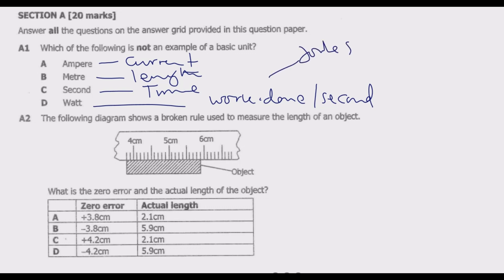Watt combines joules (work done) and seconds (time). So D is not an example of a basic unit. Basic units measure one item, whereas a derived unit is a combination of two. So watt is a derived unit. We move to question 2.